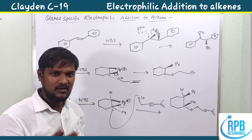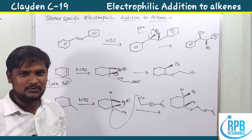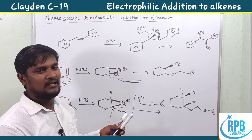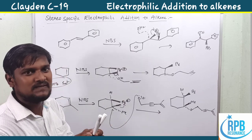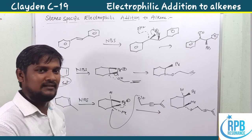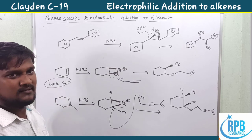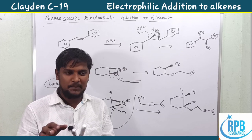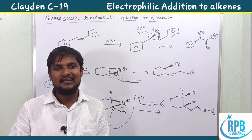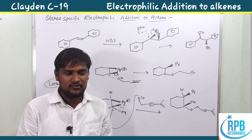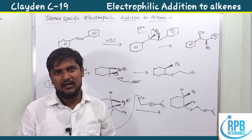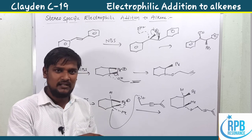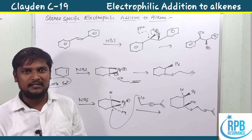To summarize: cis compound with syn addition gives meso; cis with anti addition gives racemic mixture; trans with syn addition gives racemic mixture; trans with anti addition gives meso compounds. This is the overall stereospecificity of electrophilic addition to alkenes. That's all for this video. The next video will cover epoxides, dihydroxylations, and glycol cleavage of alkenes. Thank you so much for watching.